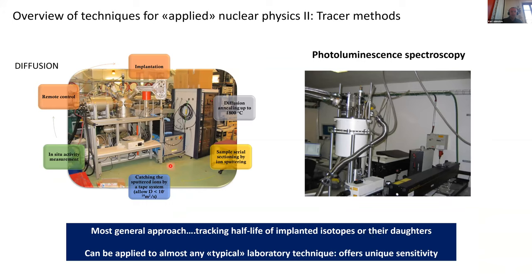For tracer diffusion, beams are implanted onto a material, then we can anneal the sample — basically cook it at a certain temperature — and then remove layers of the surface which are measured using a germanium detector, allowing us to measure the activity of each removed slice and build up a picture of the diffusion process. Here we see an optical spectrometer for photoluminescence — a very classical setup which, once you look at the half-lives of the planted materials, allows you to get chemical selectivity not usually available otherwise.